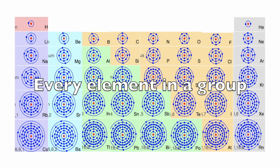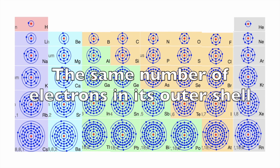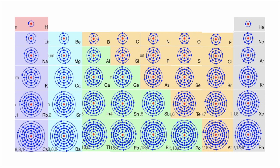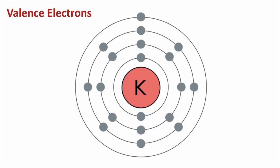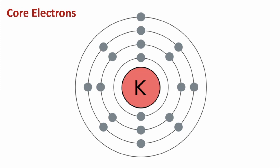Every element in a group, which is also called a family or column, has the same number of valence electrons in it. That means the same number of electrons in its outer shell. Just to review, valence electrons are the electrons in the highest occupied shell of an element's atom, so we're talking about the outer shell here. Core electrons are the electrons in the inner shells.